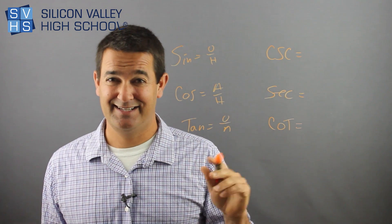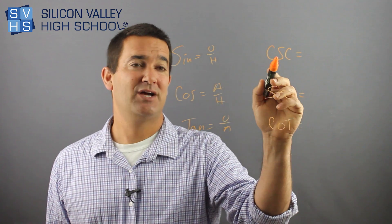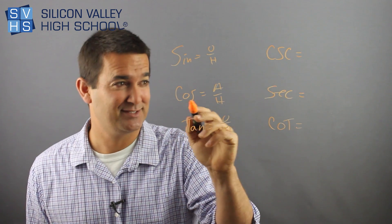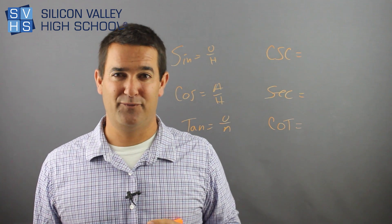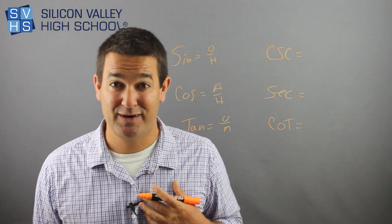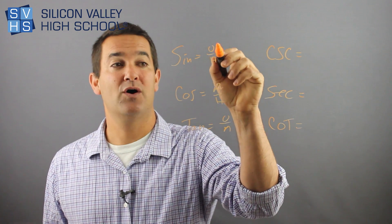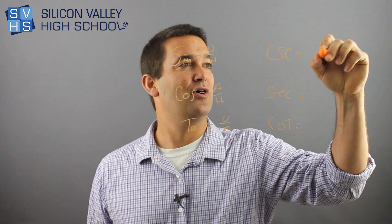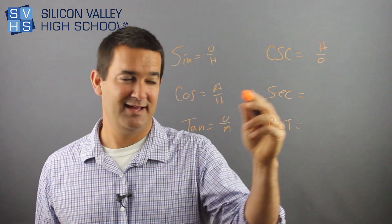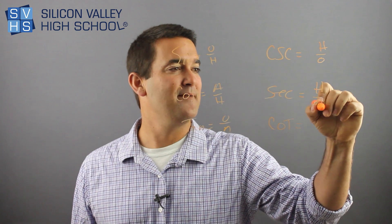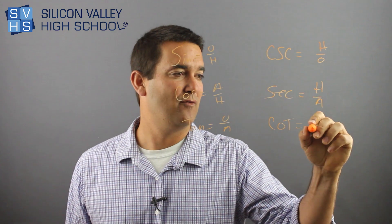Now, before we go on — this is mildly annoying. It looks like cosine and cosecant would be related. That's a bit of a curveball, so don't mix that up. The reciprocal of sine is cosecant, and the reciprocal of cosine is secant. The reciprocal — it's literally the flip. So if sine is O over H, cosecant is H over O. If cosine is A over H, secant is H over A. And if tangent is O over A, cotangent is A over O.